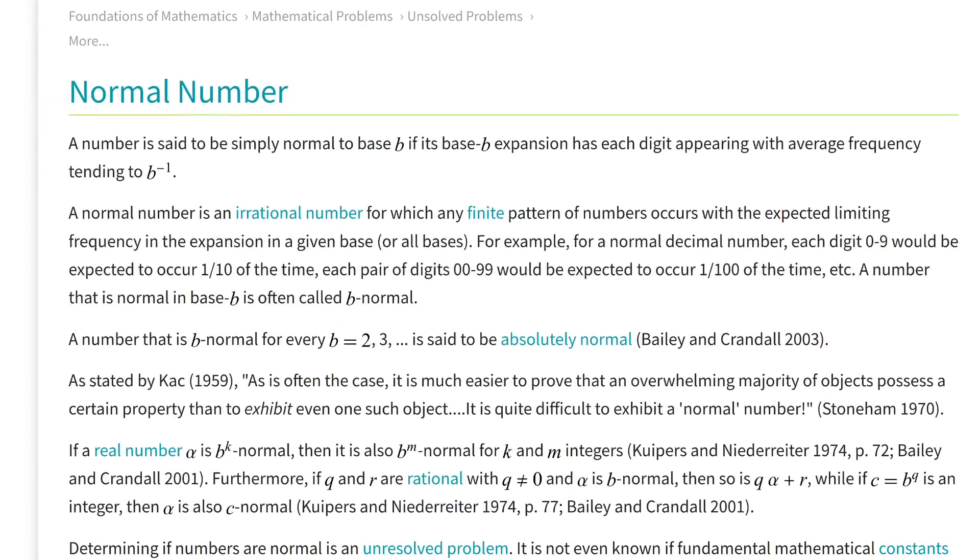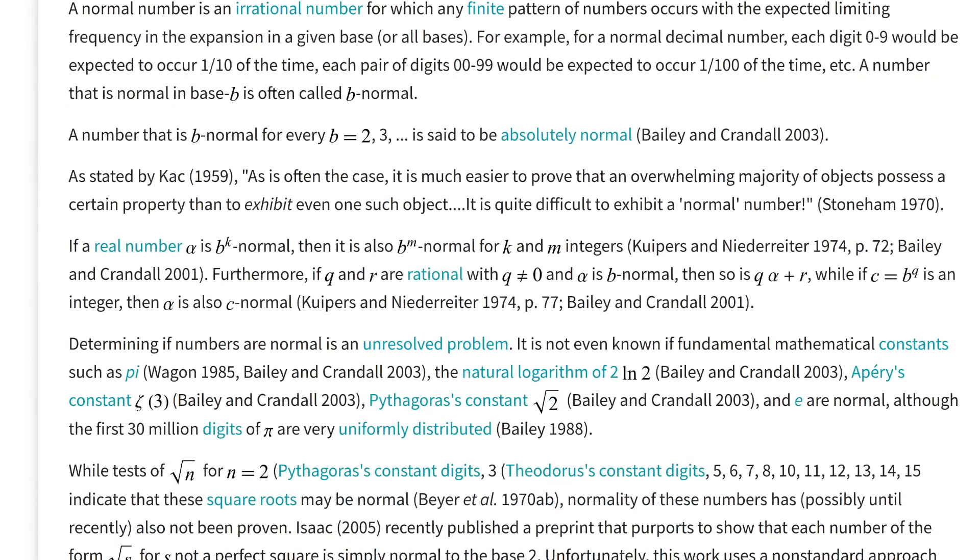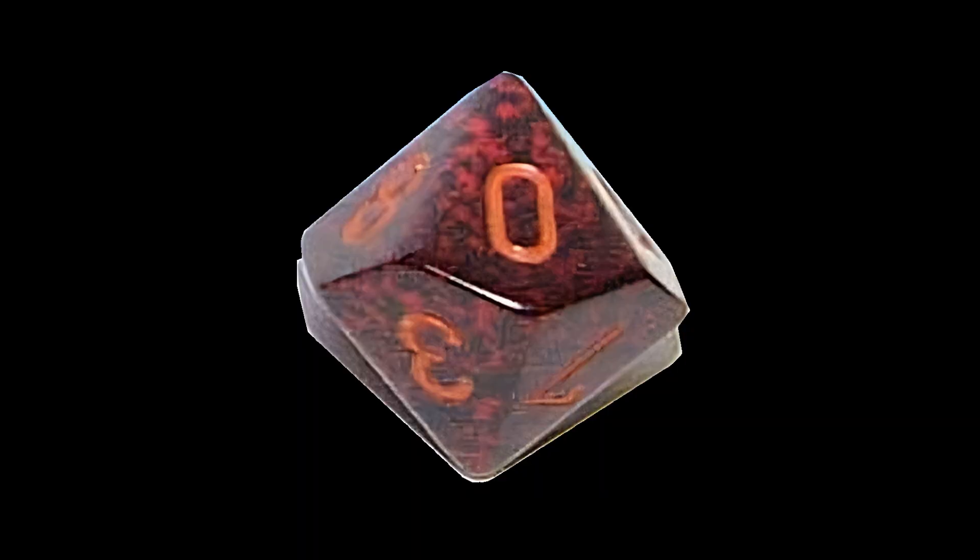Or were they? See, many people believe that pi is what's called a normal number. What this means is that the digits behave statistically as though they are completely and uniformly random.